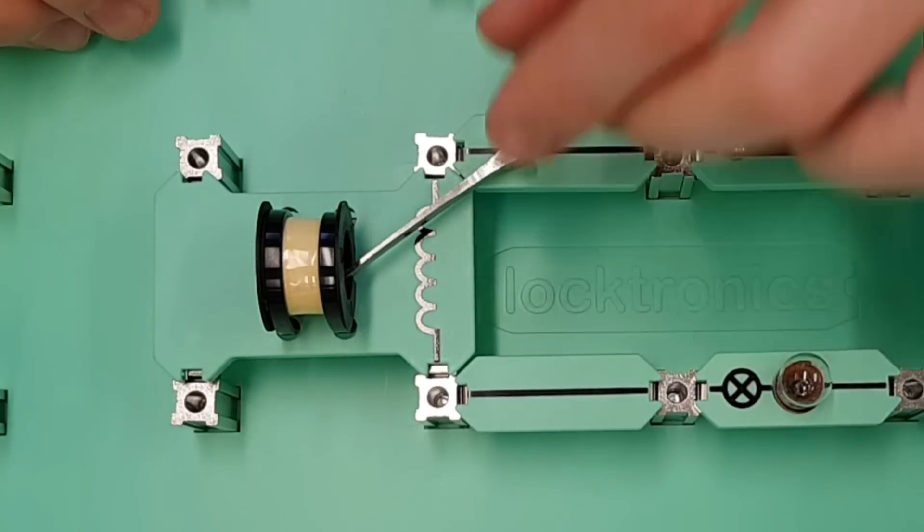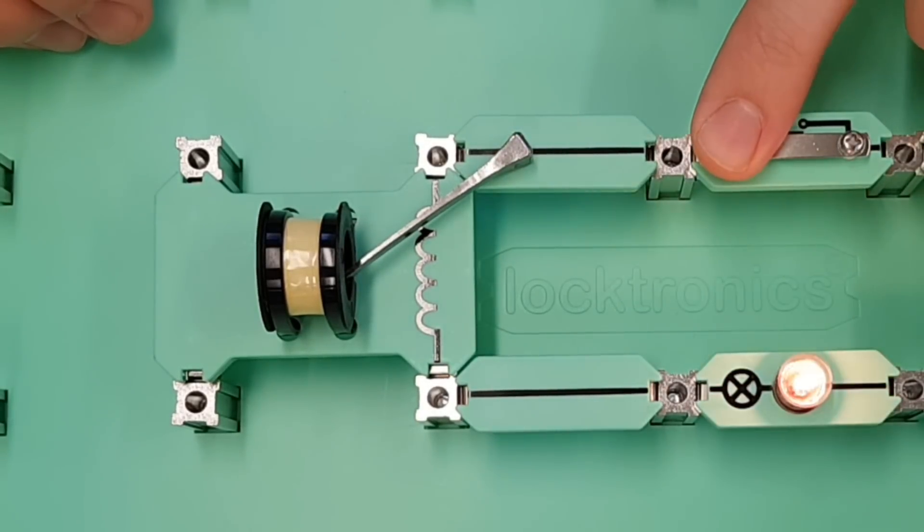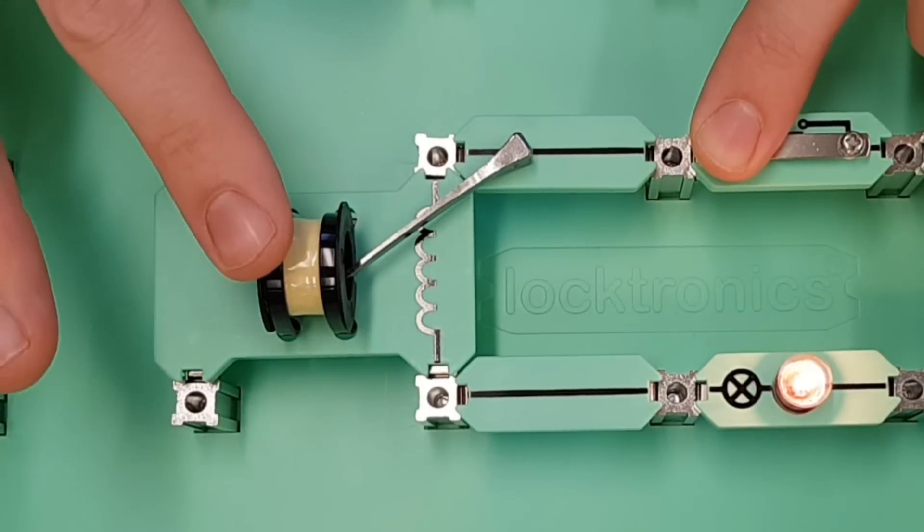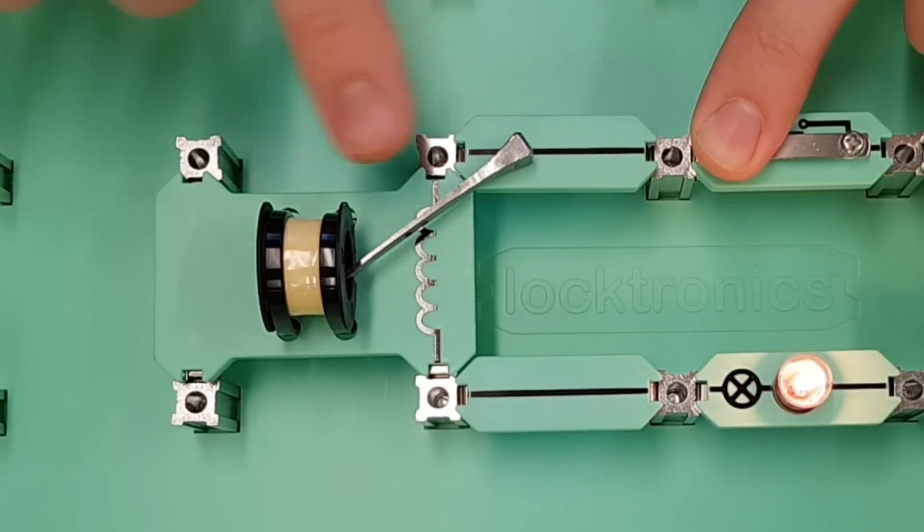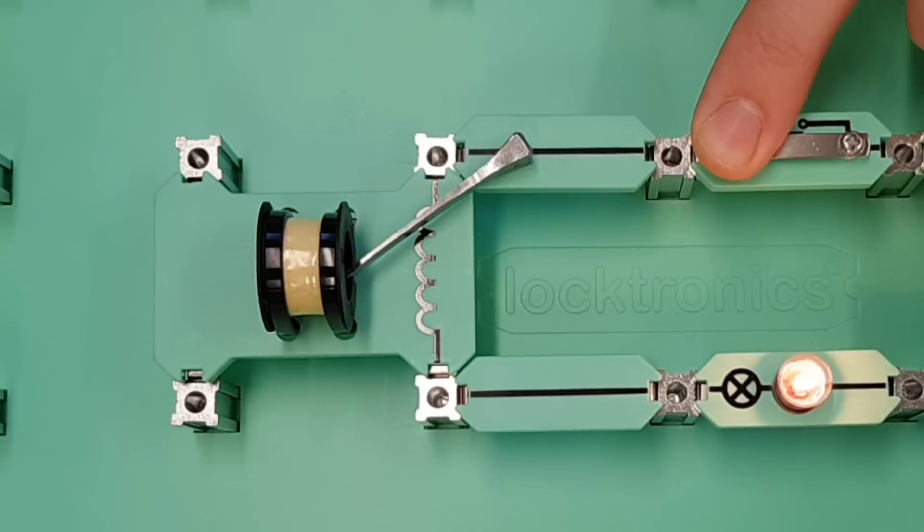So if I put my steel nail here and I turn the circuit on, you can see that the nail doesn't really do anything, it just sits there. So there's a magnetic field here, there's current flowing through it, but the steel nail is not responding to that in any way.